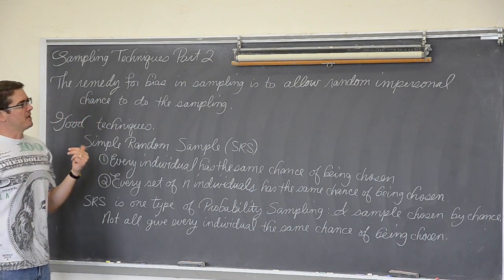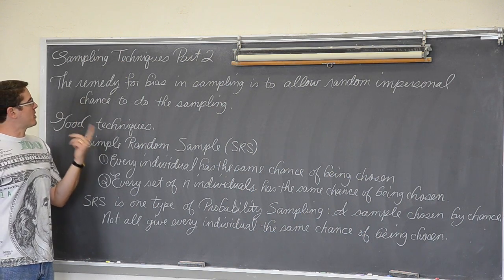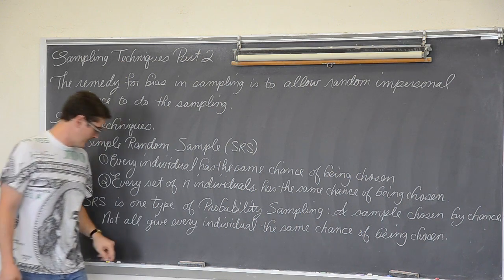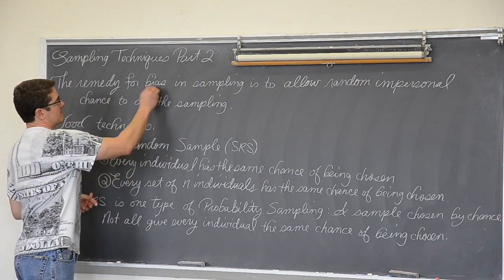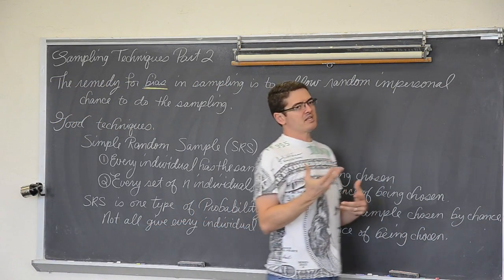The remedy for bias in sampling is to allow a random impersonal chance to do the sampling. I do realize I never talked about bias in the previous set of notes even though I had written it in there. So what is bias?